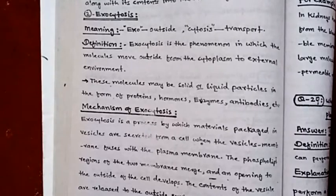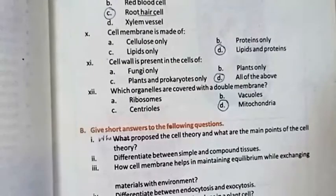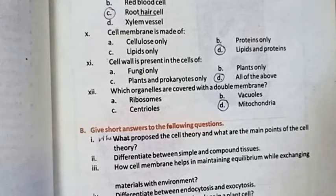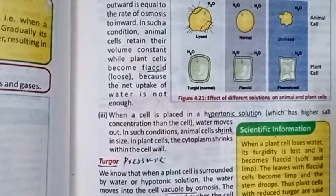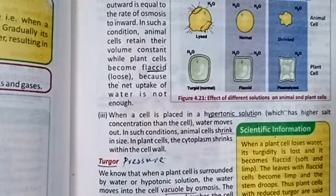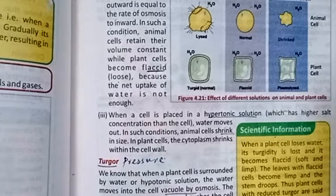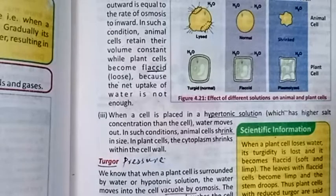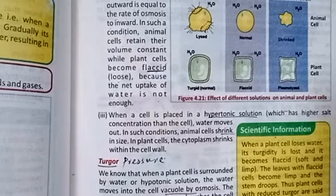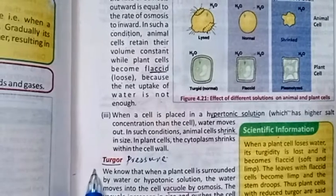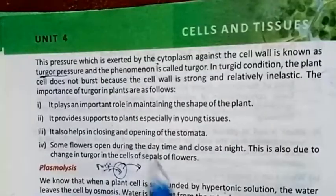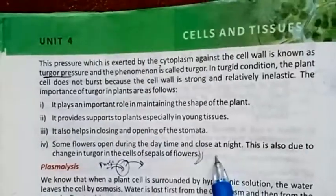Question number 5: How does turgor pressure develop in a plant? This question is in your book on page number 85. Put the heading 'turgor pressure' and the answer will start. We know that when a plant cell is surrounded by a hypotonic solution, water moves into the vacuole by osmosis. The vacuole increases in size and pushes the cell contents against the cell wall.